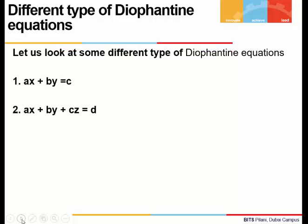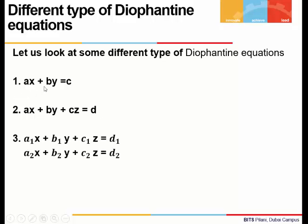Let's look at some different types of Diophantine equations. The first type is ax plus by is equal to c. This is a linear Diophantine equation in two variables x and y and three coefficients a, b, c.